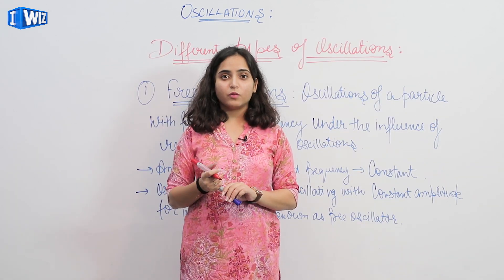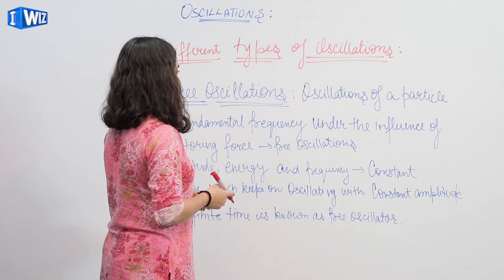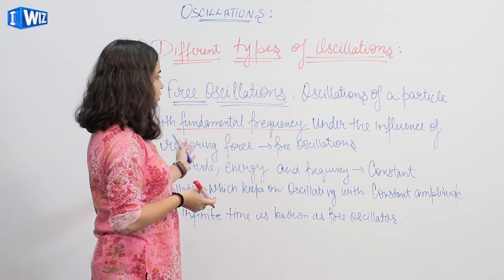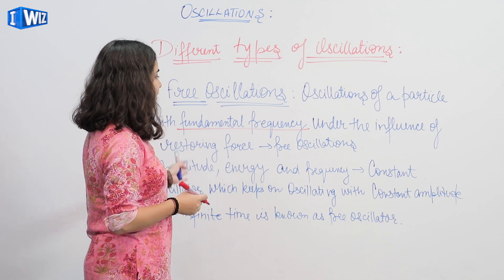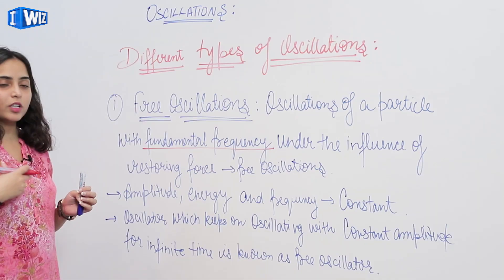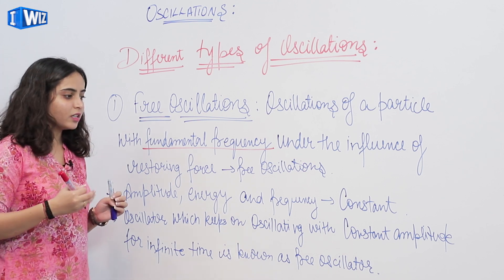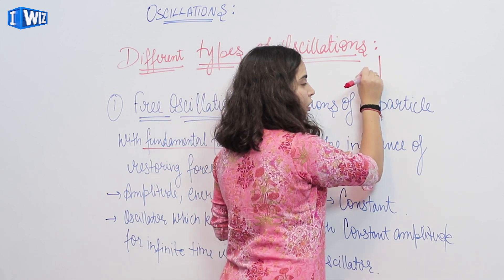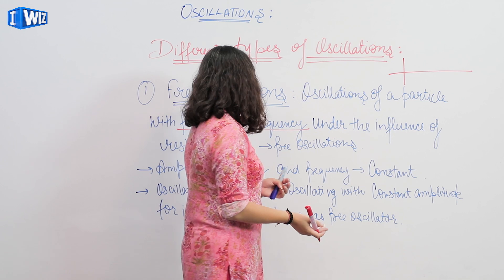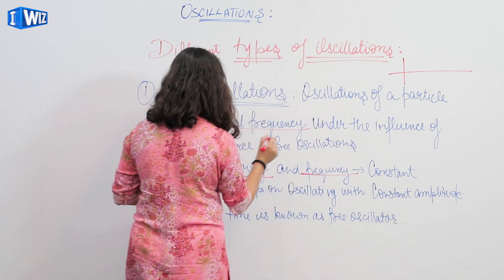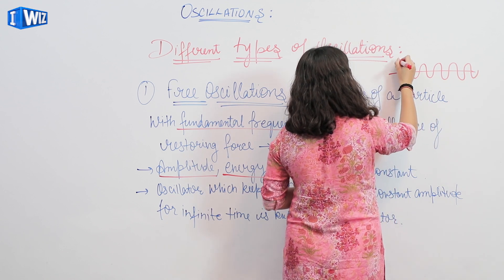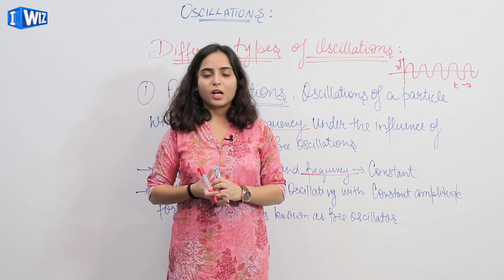Now we will study types of oscillations. The first type is free oscillations — oscillations of a particle with fundamental frequency under the influence of restoring force. Amplitude, energy, and frequency in free oscillations remain constant. An oscillator which keeps oscillating with constant amplitude for infinite time is known as a free oscillator, meaning it oscillates indefinitely without any loss of energy. This is displacement versus time for free oscillations.